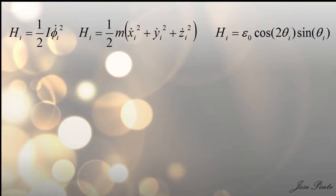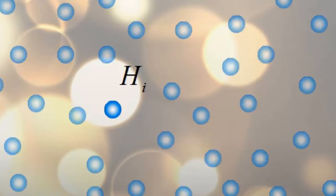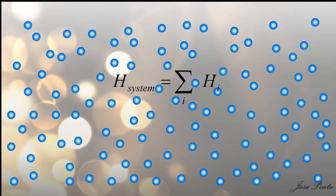In each case, the objects making up the system have a Hamiltonian H_i. So that the total Hamiltonian of the system is the sum of the Hamiltonians.